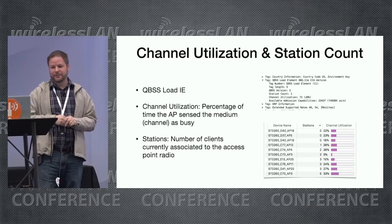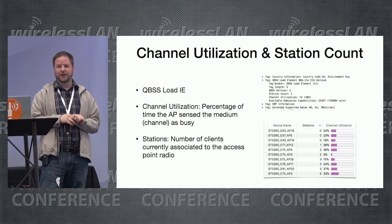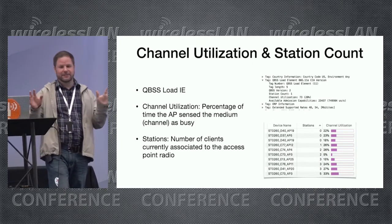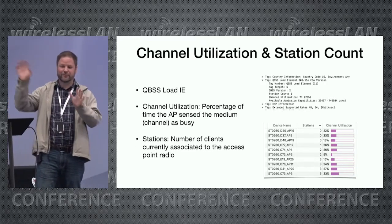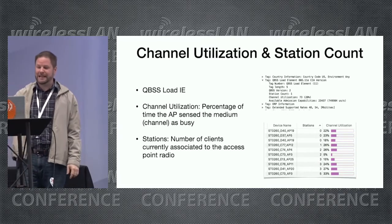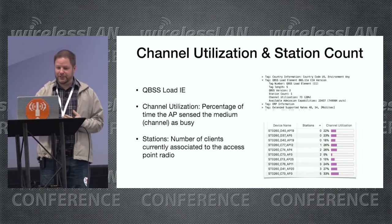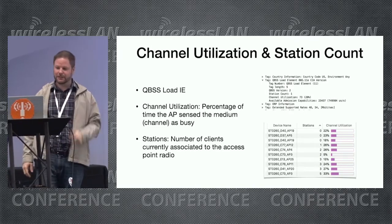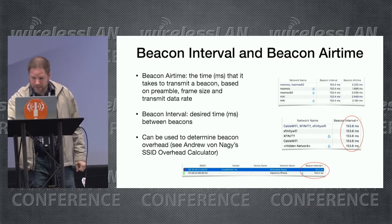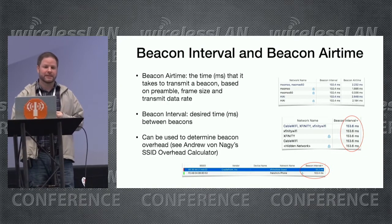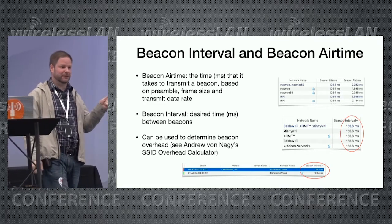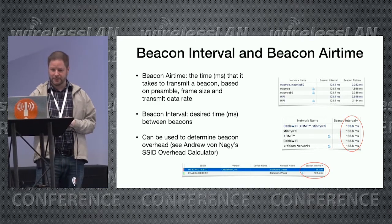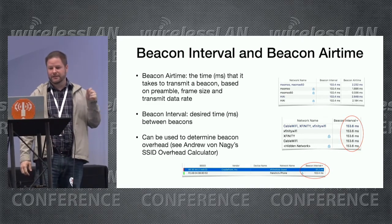Another feature is the display of channel utilization and station count from the QBSS Load information element. Some people think I'm computing this from the scan results, but no — it comes directly from that information element. Channel utilization is the percentage of time the AP senses the medium as busy, as defined by the QBSS element, and the station count is the number of clients connected to the access point radio. There are also additional columns for beacon airtime — calculated based on preamble, frame size, and the transmit data rate set for beacons.